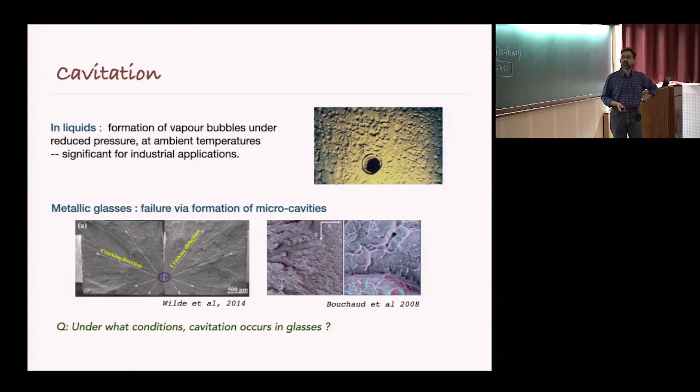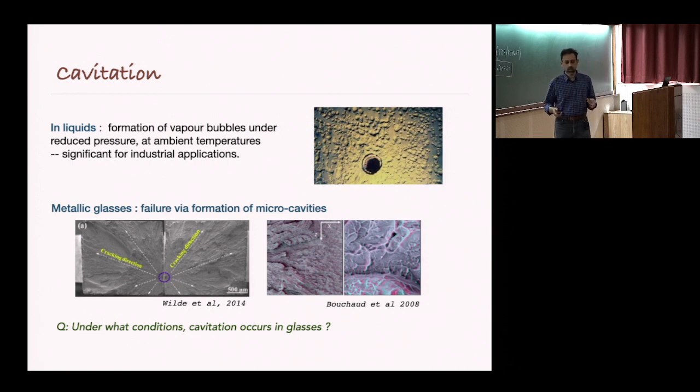Cavitation in liquids has been studied quite a lot because it's important for naval applications. Cavitation happens when a very fast-moving object goes through water, and because of the high velocity, a hole starts appearing inside the fluid. This kind of cavity formation leads to a lot of accidents. In the context of naval applications, it has been studied very extensively.